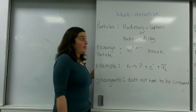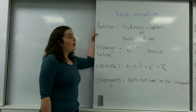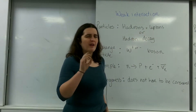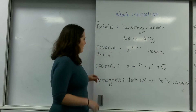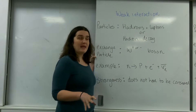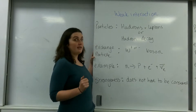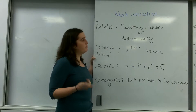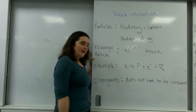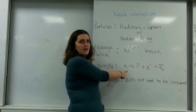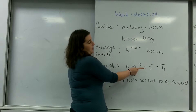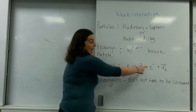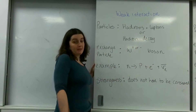Some notes about the weak interaction: the particles involved are either hadrons and leptons, or hadrons decaying. The exchange particle — the particle that appears, takes some mass and in this case some charge, then gives it to something else and disappears — is known as the W plus or minus boson. An example is beta decay: a neutron decaying to a proton, an electron, and an anti-electron neutrino. That has hadrons and leptons in it, so it must be the weak interaction.